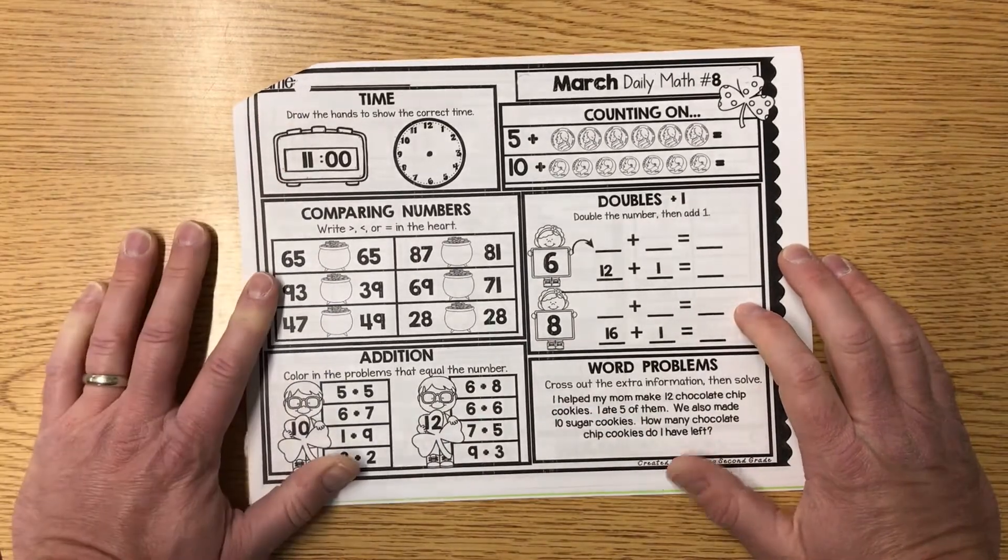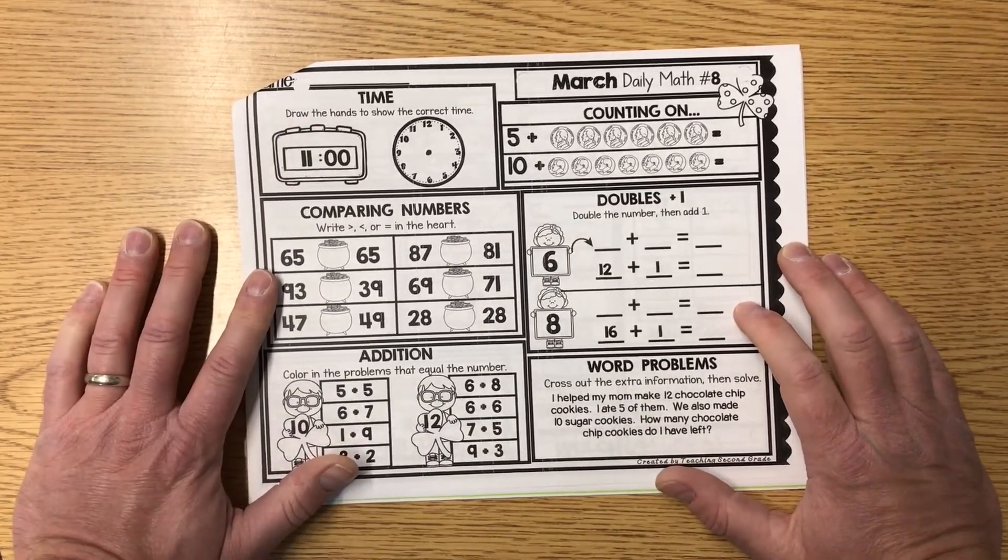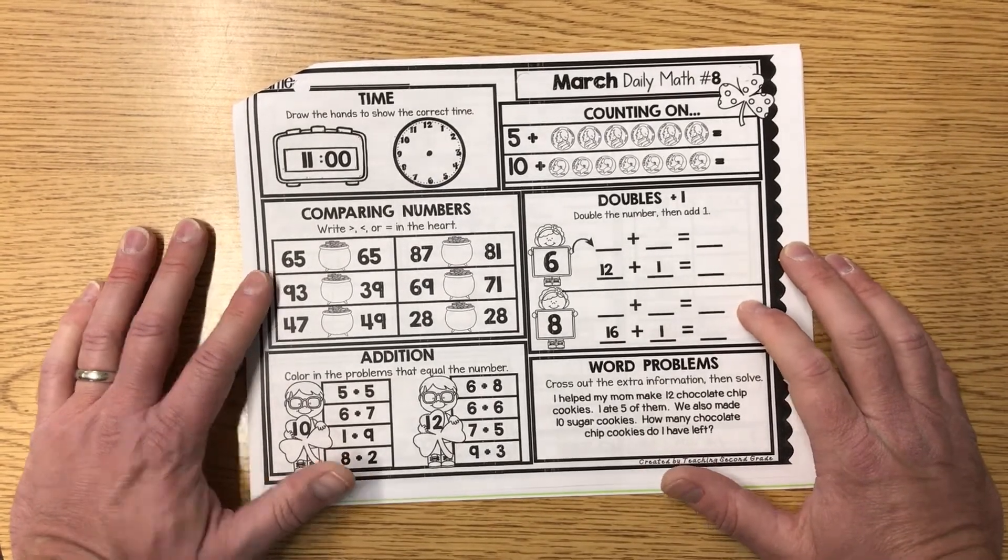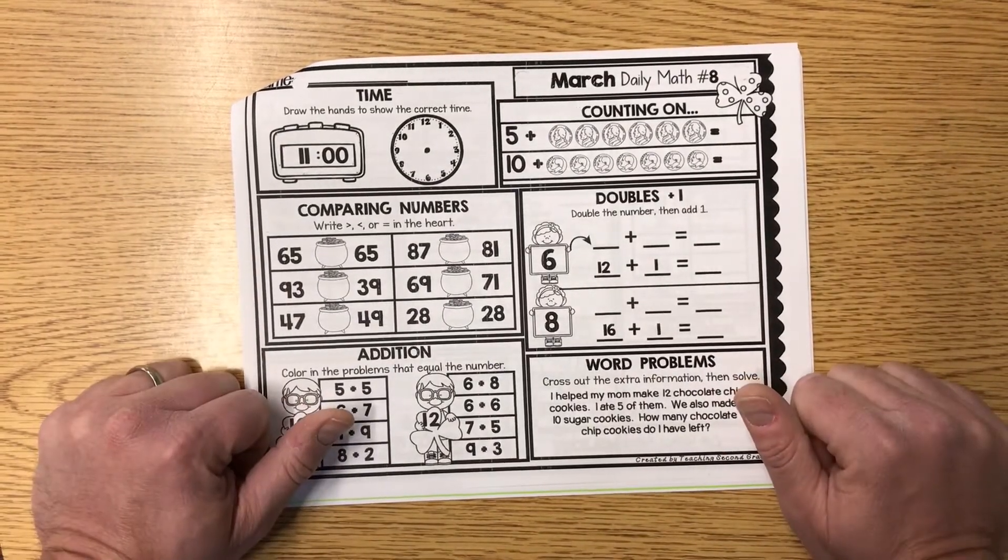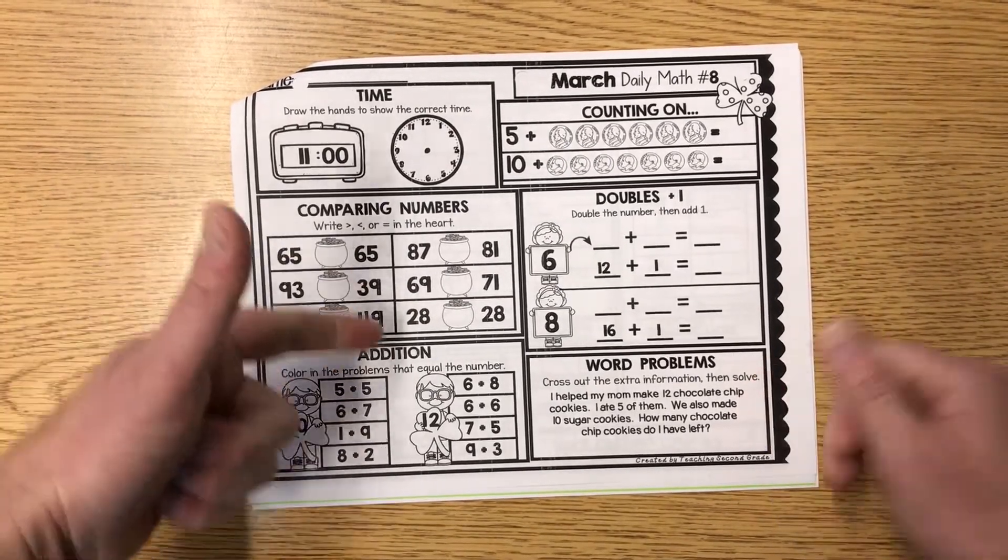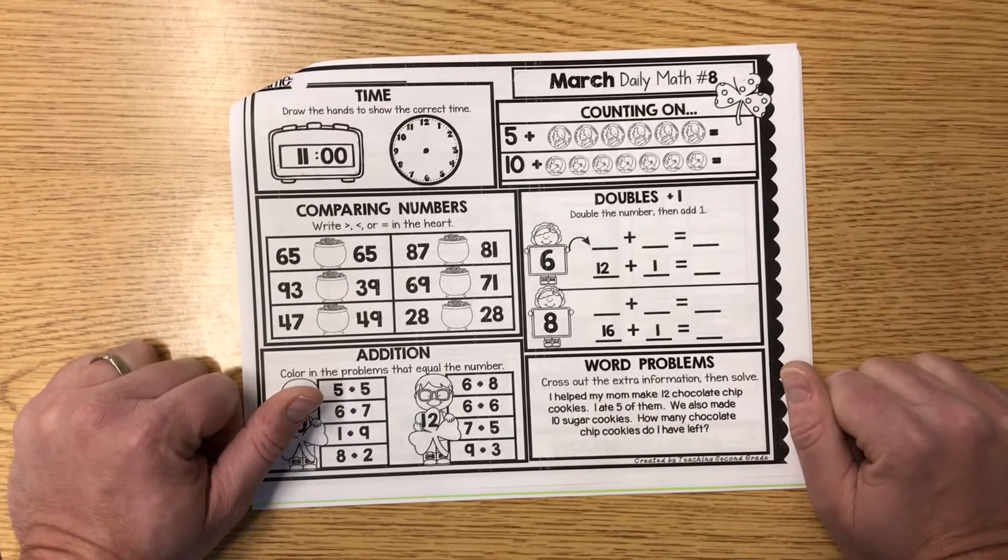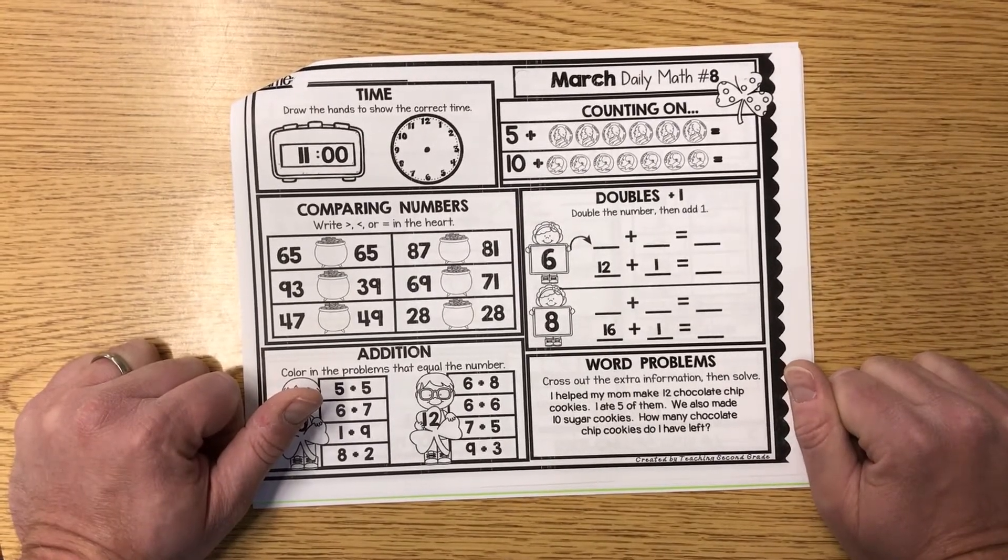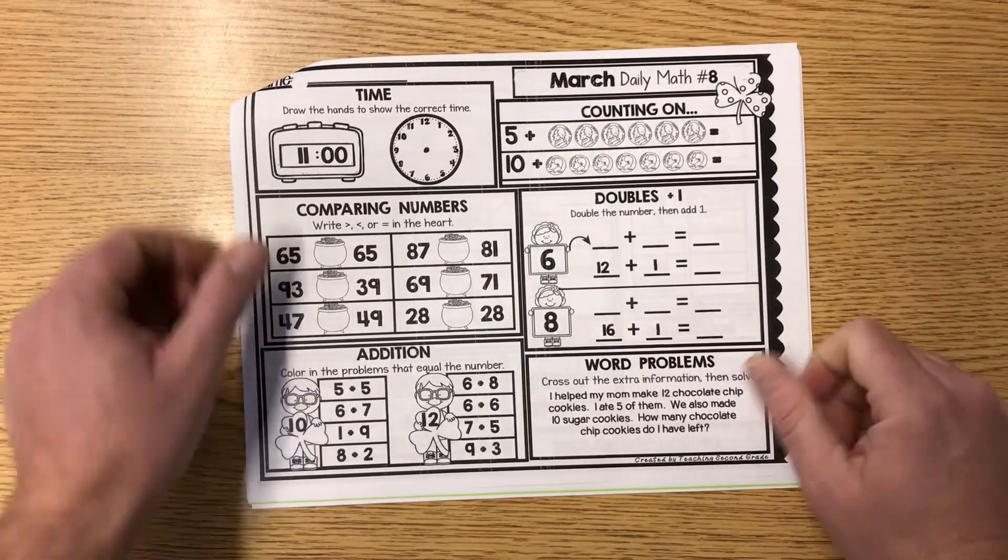All right guys, that is your independent learning for today. Make sure you guys are using Razz Kids and Dreambox for 30 minutes each, and absolutely 20 to 30 minutes of a good fit book. You guys can throw in Prodigy, Google Docs, cool programs like that to help you guys out. I hope you have a wonderful learning day and I'll talk to you soon.